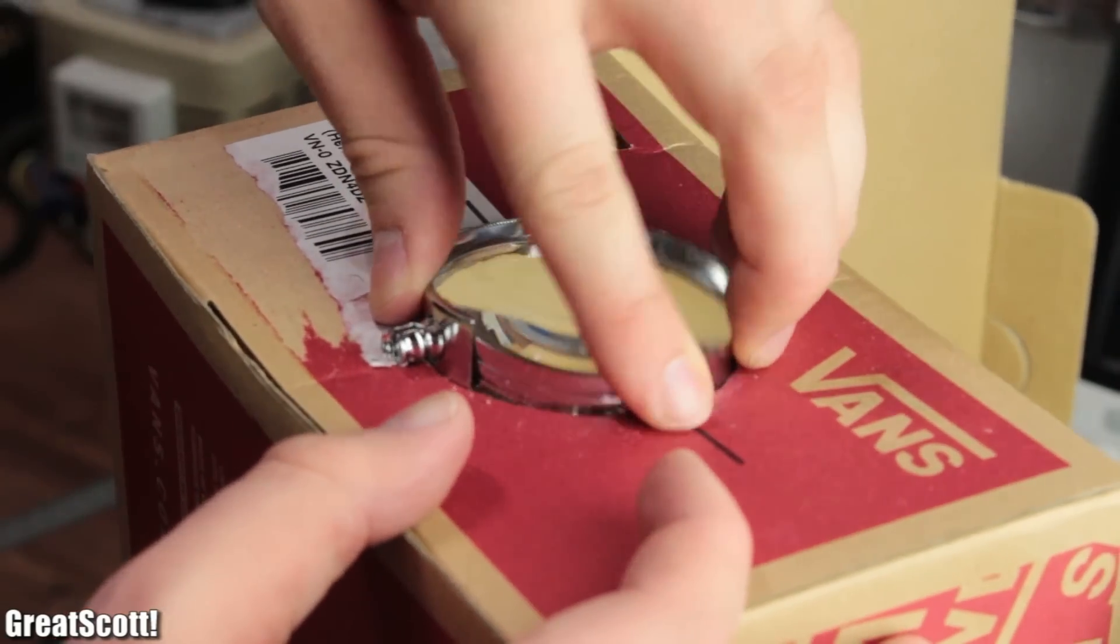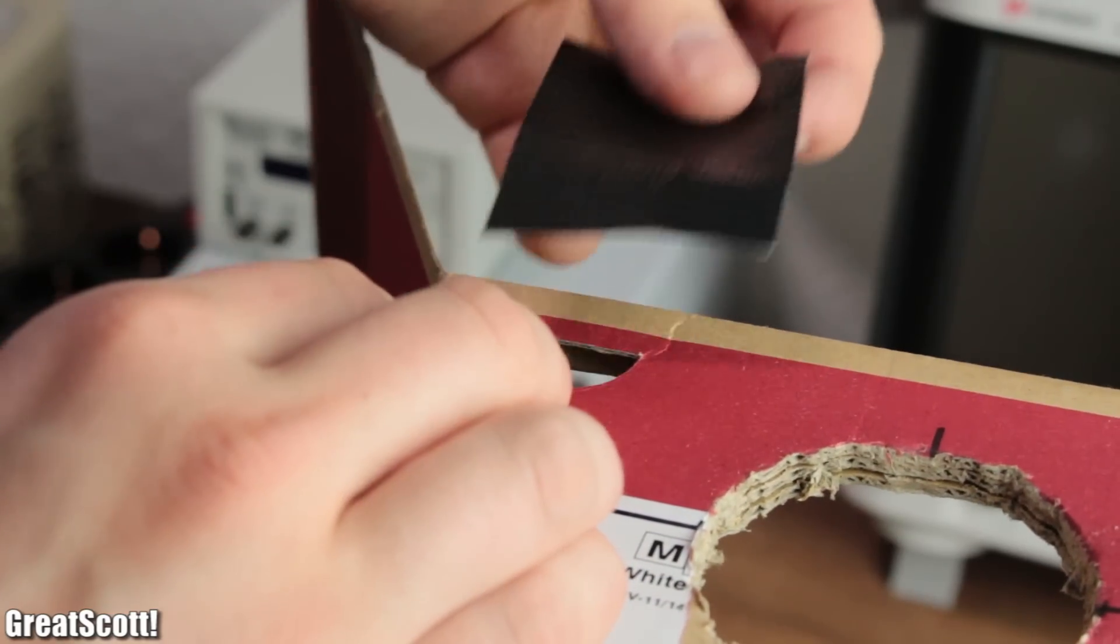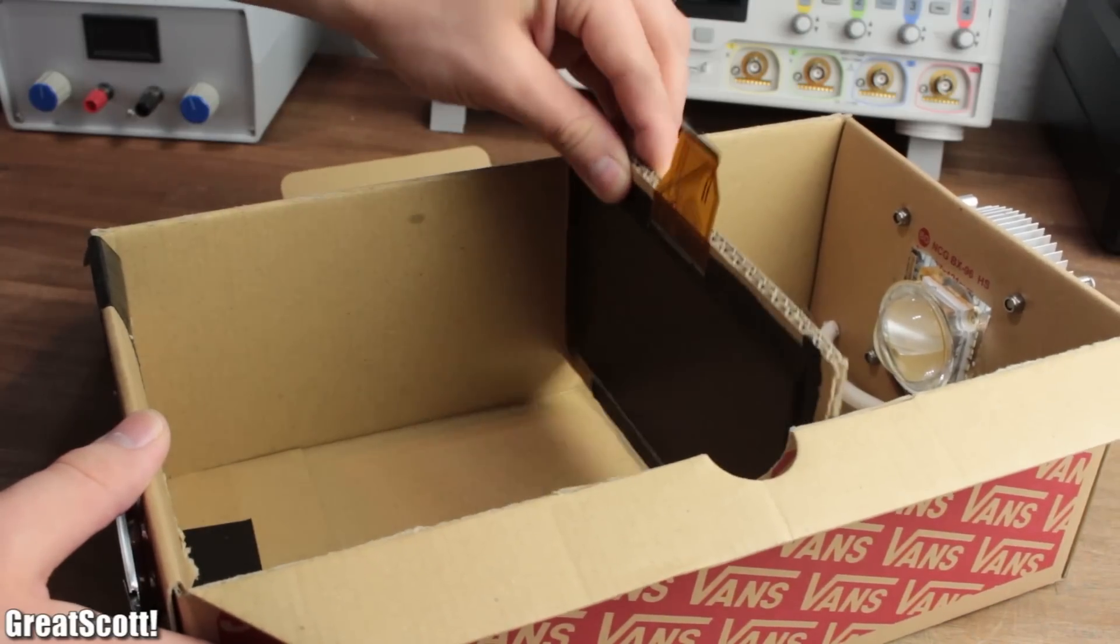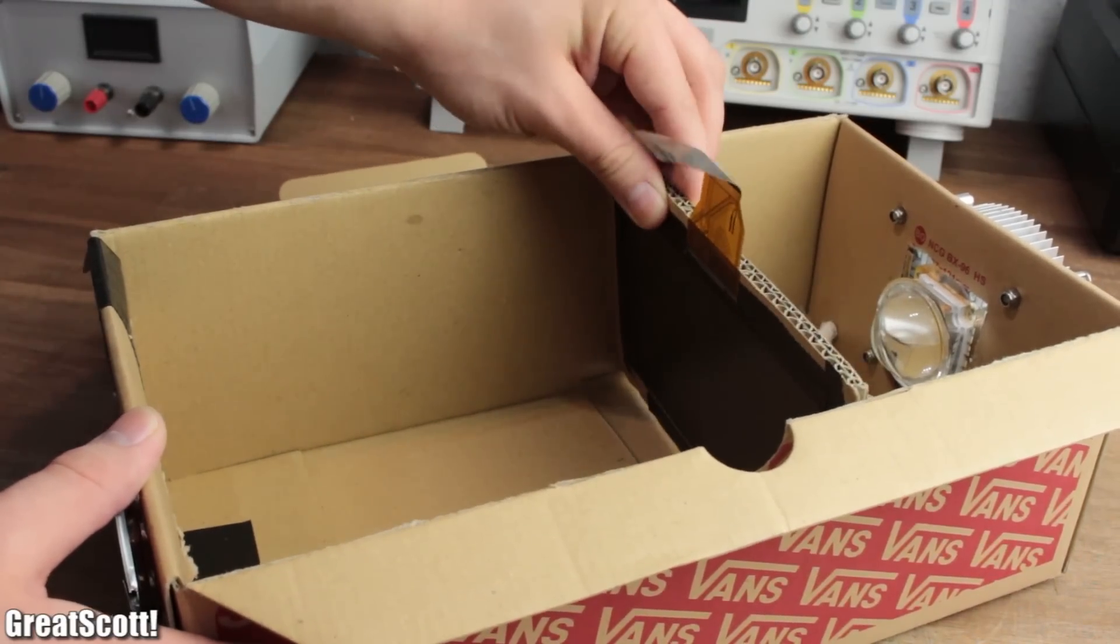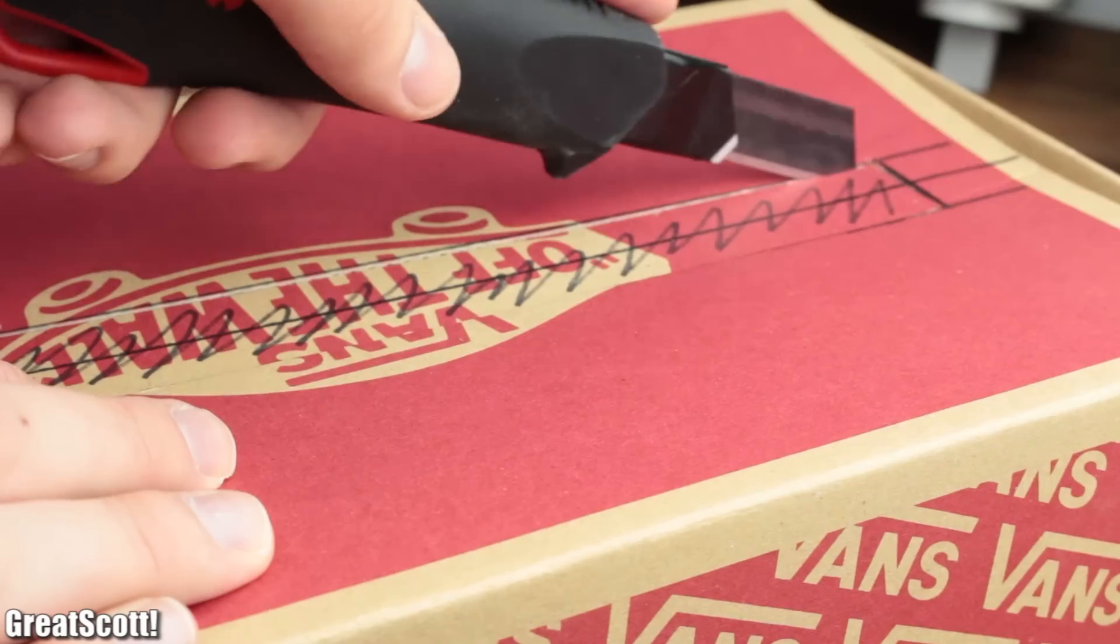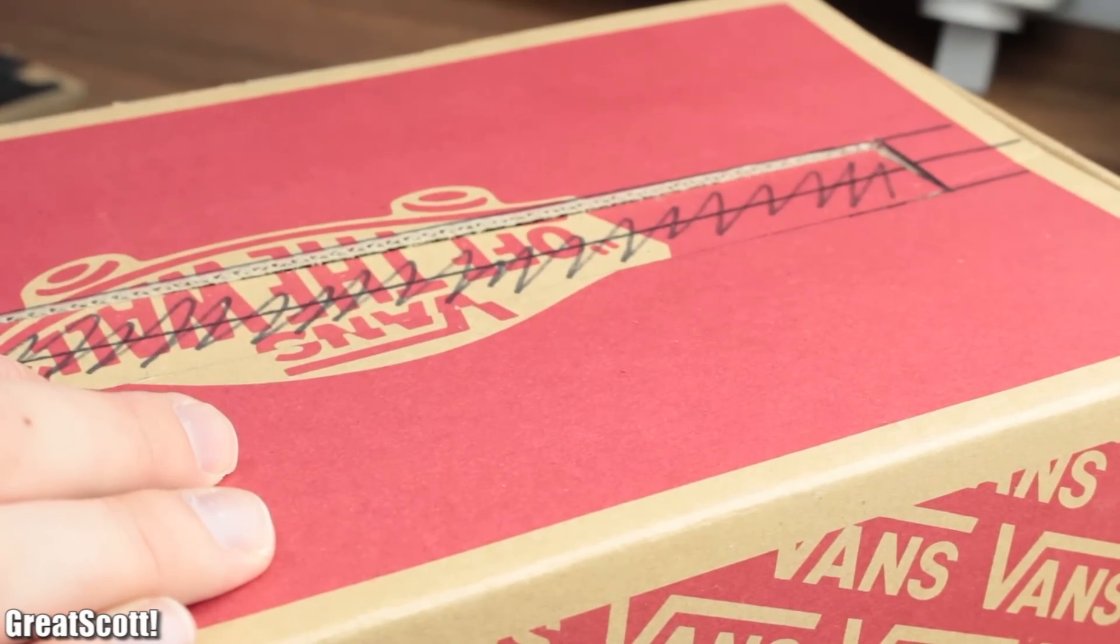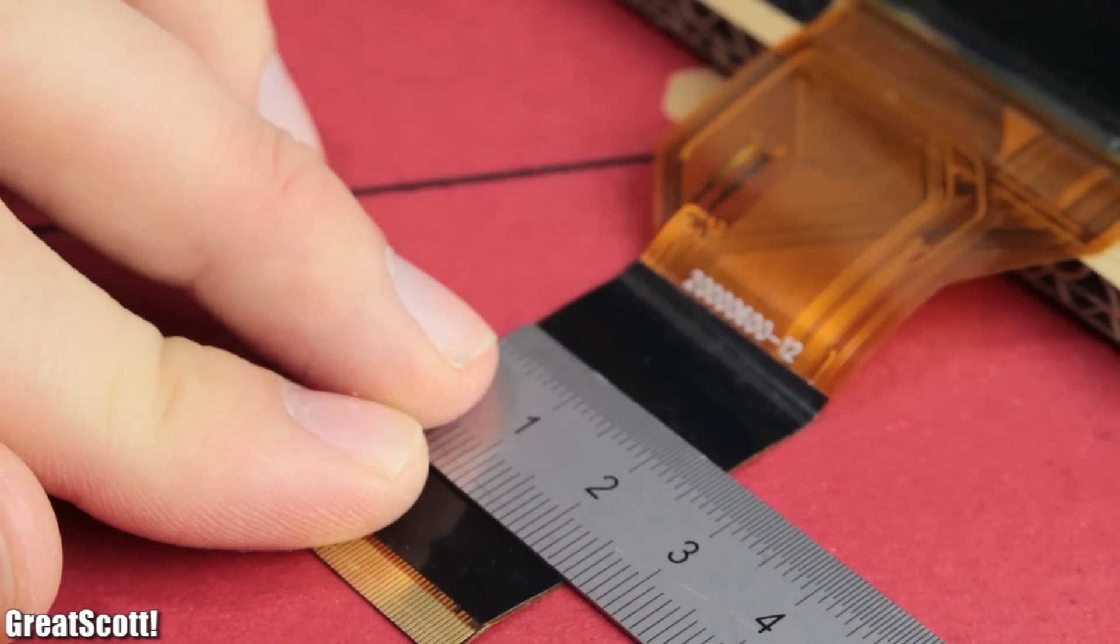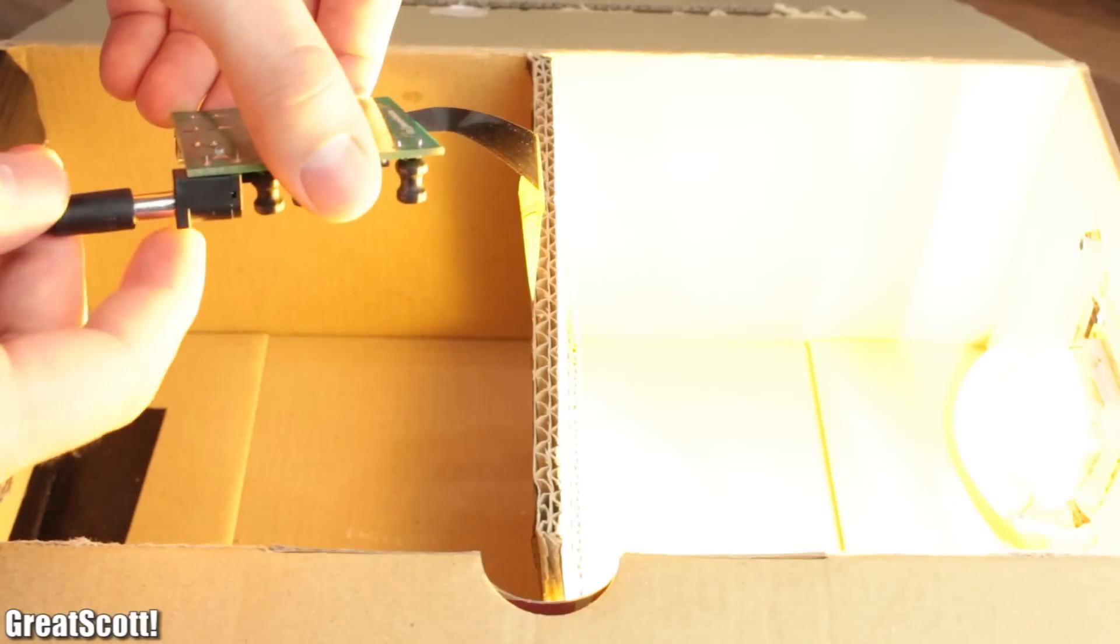I pressed the lens in its place and covered every unnecessary opening with duct tape. To later adjust the screen position easily and therefore focus the image, I also marked the center line of the lid and created a long rectangle cutout with a width of 2.5cm according to the width of the flexible flat cable.